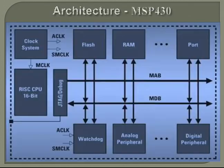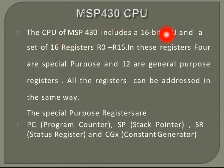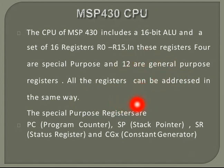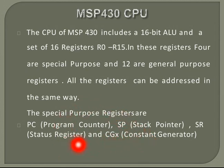The MSP430 CPU includes a 16-bit ALU and a set of 16 registers, from R0 to R15. Out of these, four are special-purpose registers (R0 to R3) and the remaining 12 are general-purpose registers. The four special-purpose registers are: PC (Program Counter), SP (Stack Pointer), SR (Status Register), and CG (Constant Generator). These will be discussed in more detail in Part B.